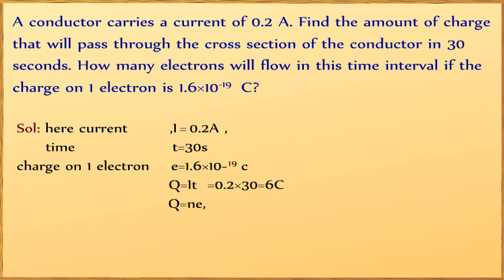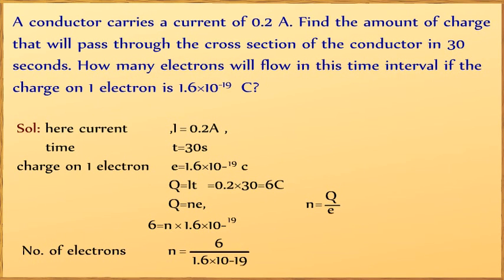Q equals Ne, so N = Q/e. Therefore, 6 = N × 1.6 × 10^-19. Number of electrons N = 6/(1.6 × 10^-19) = 3.75 × 10^19.